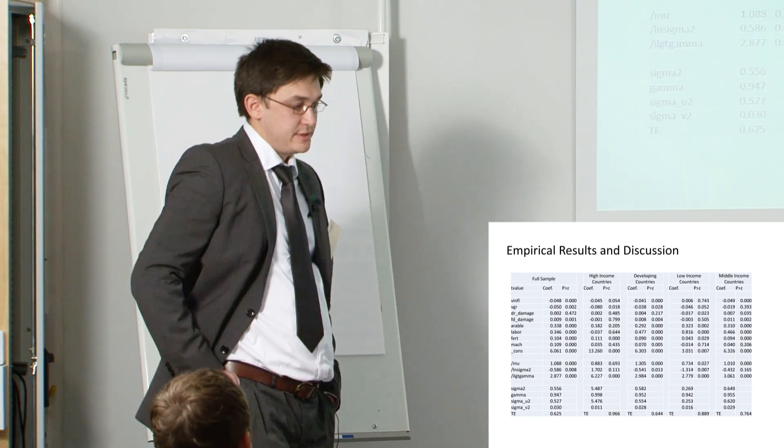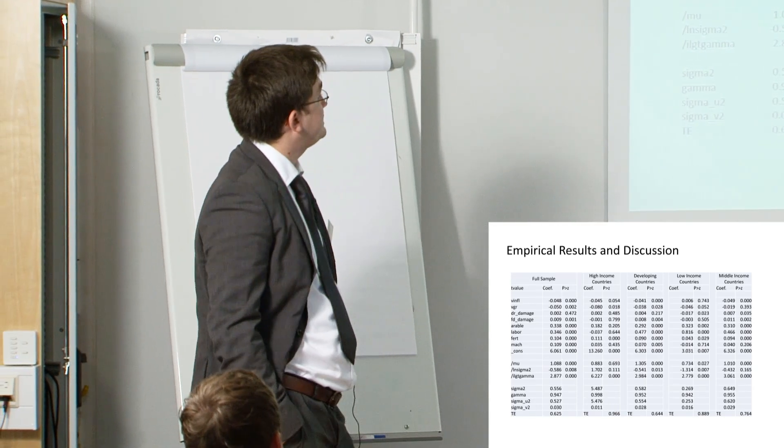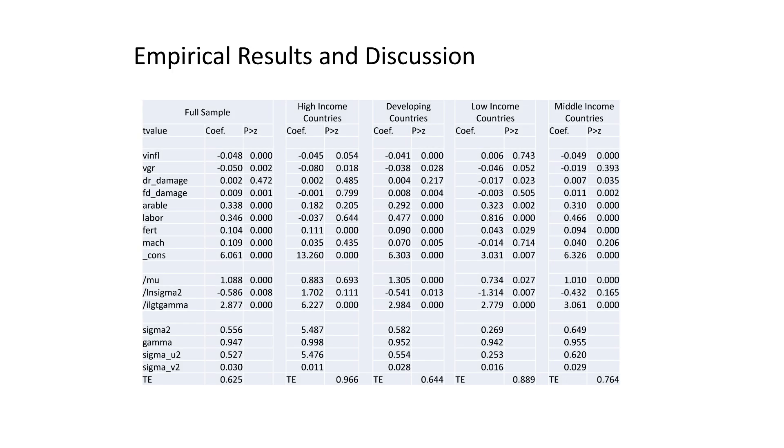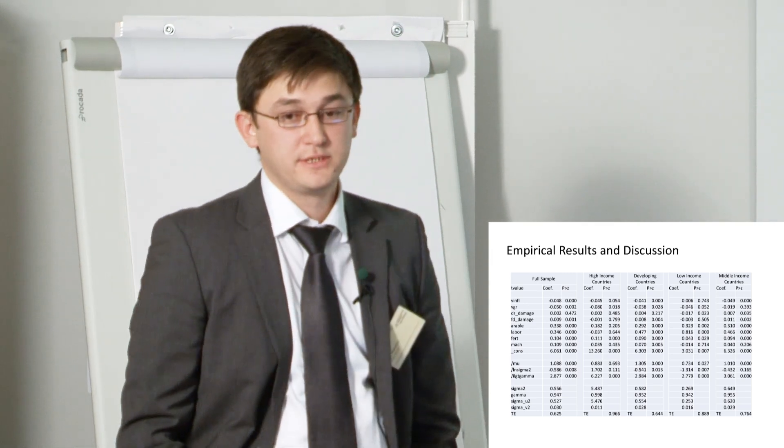Our empirical results for the moment looks like this. In the full sample we have all the countries, 135 countries, and we can see for the moment that our financial crisis variables are significant and they have a negative impact to agricultural production. And surprisingly we have the flood, our climate variable, has a positive impact.